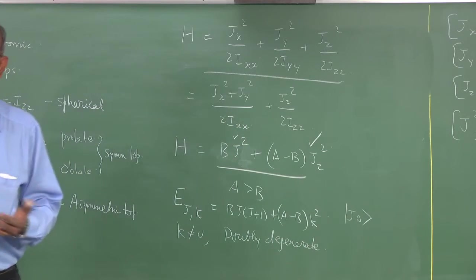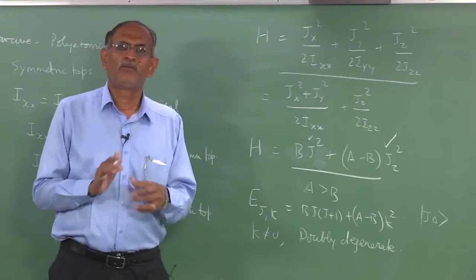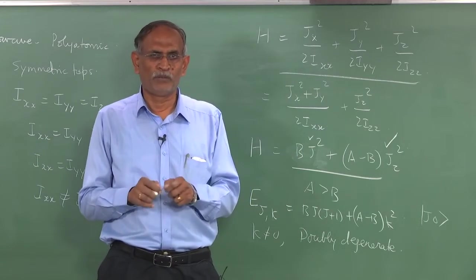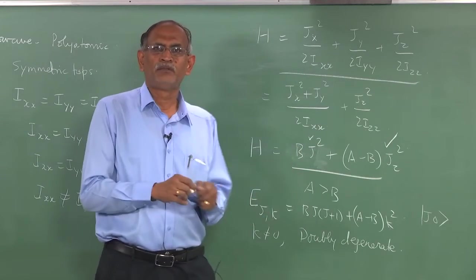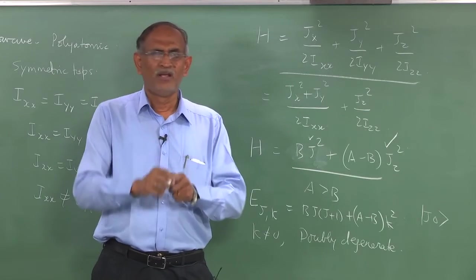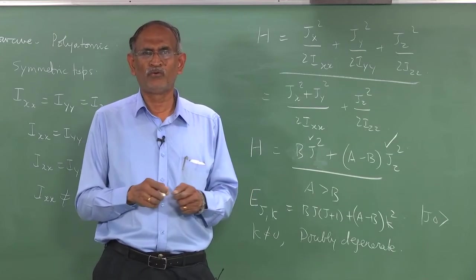We also looked at the prolate and the oblate symmetric top. And here also it is important to note that the microwave spectrum is possible only if the molecule has a permanent dipole moment. But it is possible that the molecule has a dipole moment in an arbitrary axis not along the z axis or along the x axis or y axis that you choose. Therefore,